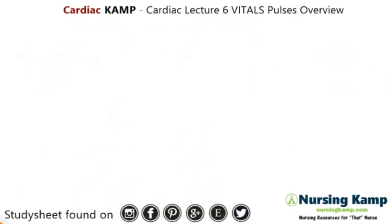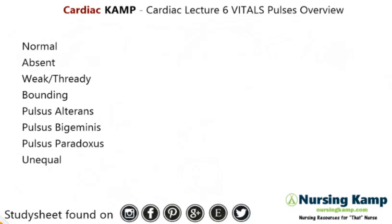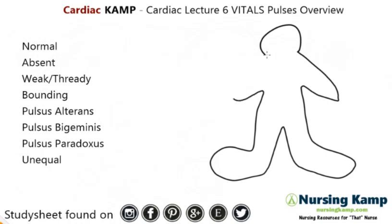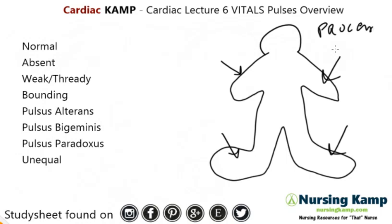The first thing we're going to talk about is pulses. Pulses are found peripherally. When we're checking pulses, as I talked about in the previous lecture, it depends on where we're checking and what's the purpose behind the checking. If there's a procedure and then there's a pulse, it's about perfusion and whether or not there's a problem with perfusion.